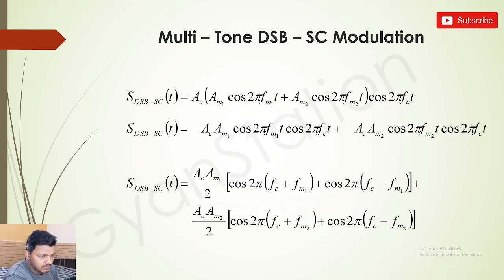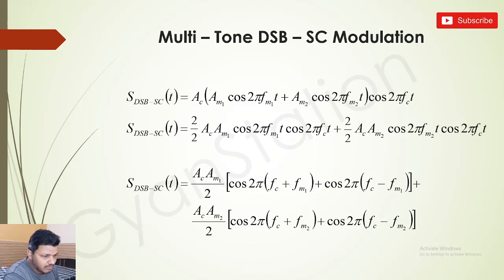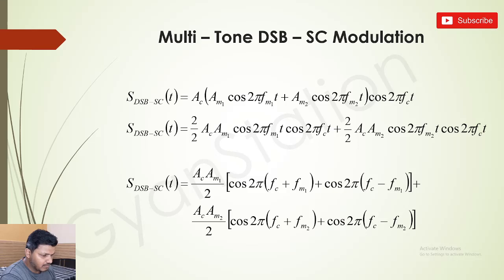We will substitute as per steps: Ac · [Am1·cos(2π·fm1·t) + Am2·cos(2π·fm2·t)] · cos(2π·fc·t). Expanding this, we see the formation of cos(A)·cos(B). We multiply by 2/2 and apply the 2·cos(A)·cos(B) formula, getting: (Ac·Am1/2)·cos(2π(fc+fm1)t) + (Ac·Am1/2)·cos(2π(fc−fm1)t).